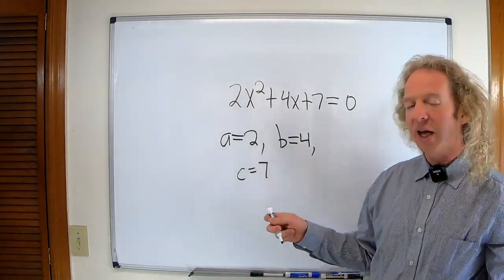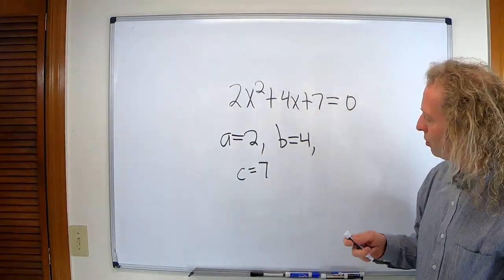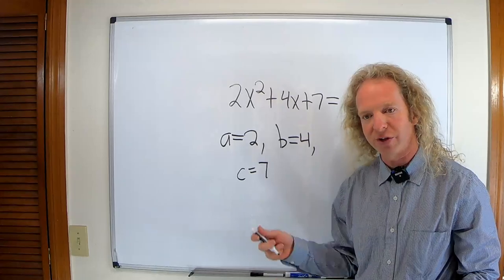Well, the thing is that A is equal to the number 2, and B is equal to the number 4, and C is equal to the number 7.